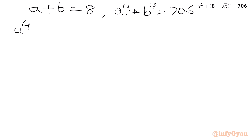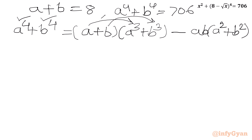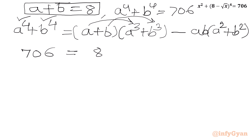Now I will write the expansion of a power 4 plus b power 4. We can write this as the product of a plus b with a cube plus b cube. Multiplying out: a with a cube gives a power 4, b with b cube gives b power 4. For the cross product terms we need to eliminate, I will subtract ab cube and a cube b. Taking ab common, we get ab times a square plus b square. Now a plus b is 8, so LHS is 706 equals 8 times a cube plus b cube minus ab times a square plus b square.